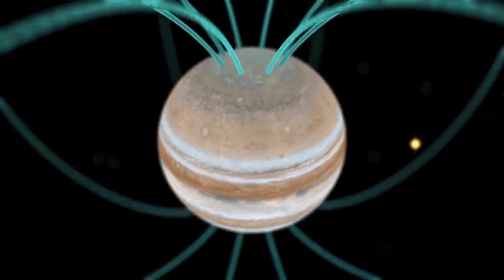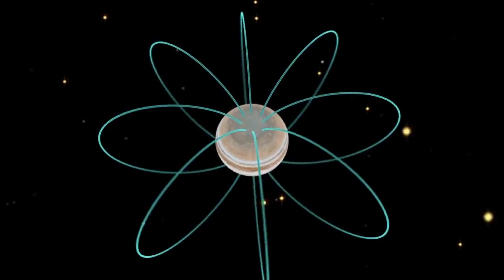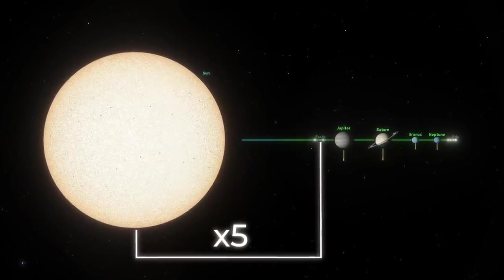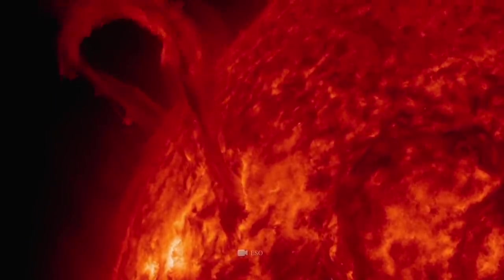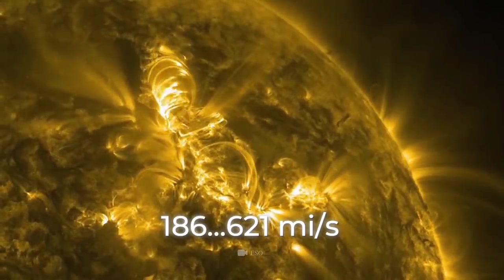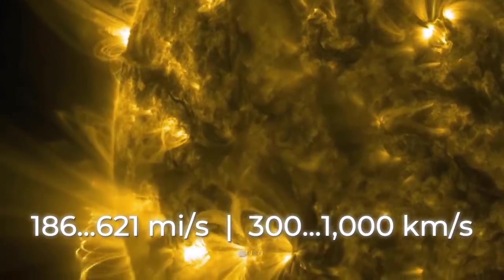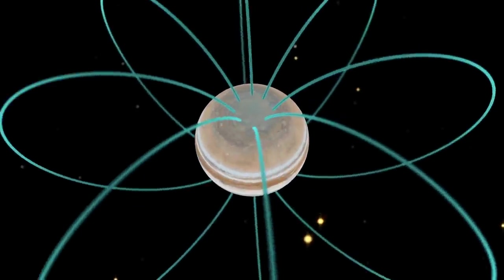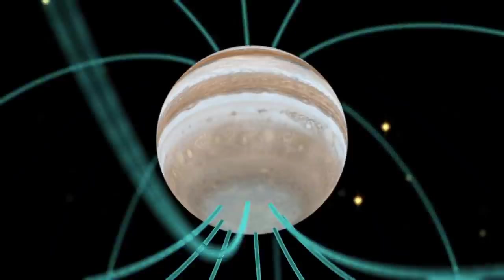The magnetic field of Jupiter is the largest formation in the solar system and extends outward to a length five times the distance from the Sun to the Earth. As the solar wind crosses outer space at an incredible speed of between 186 to 621 miles, or 300 to 1,000 kilometers per second, its collision with huge obstacles causes an entire storm of magnetic waves.